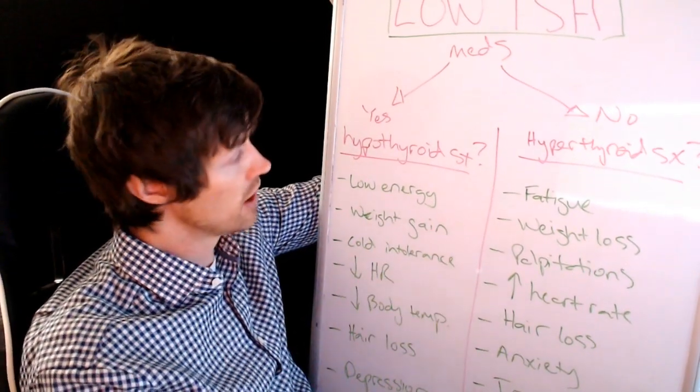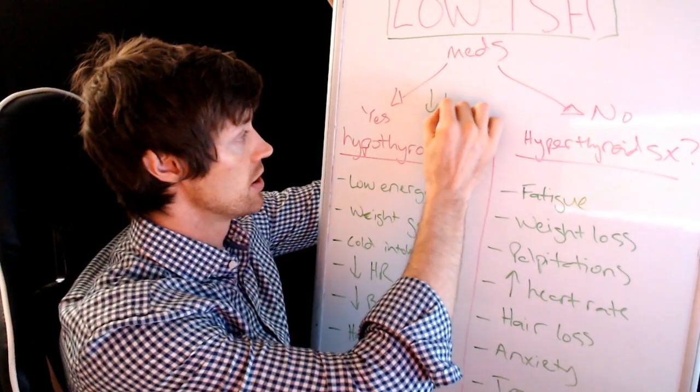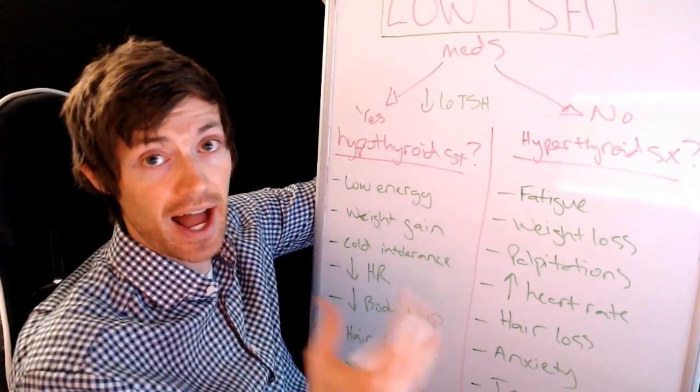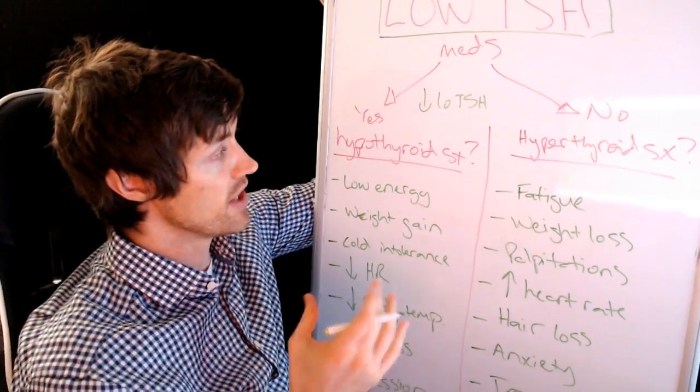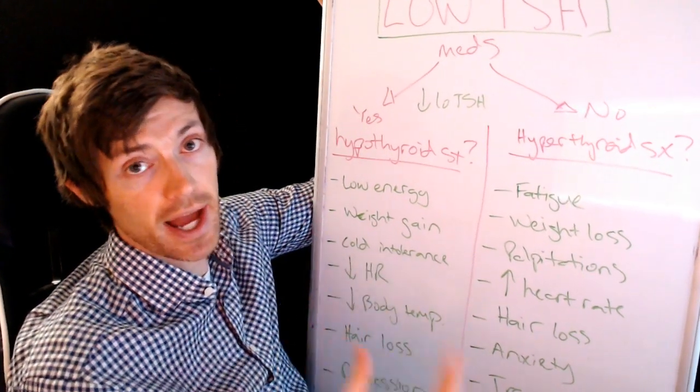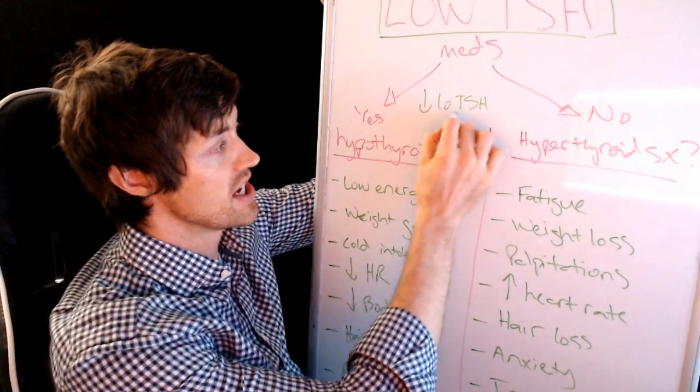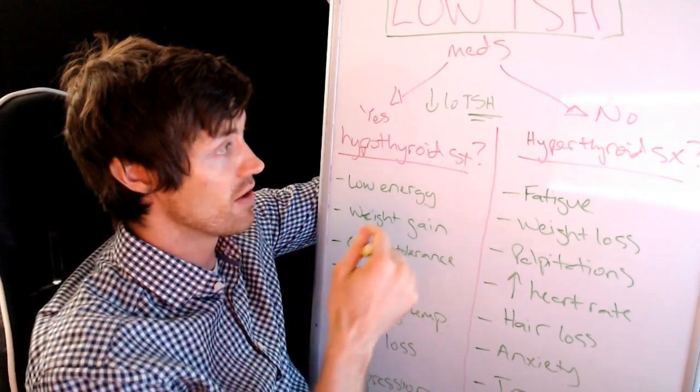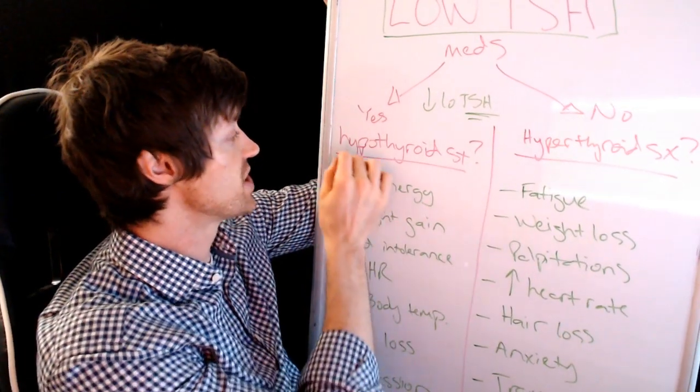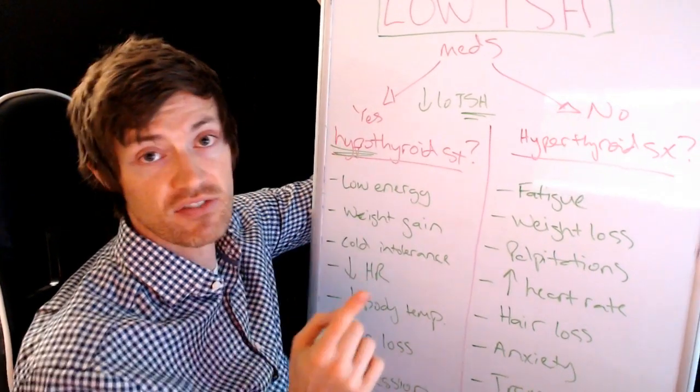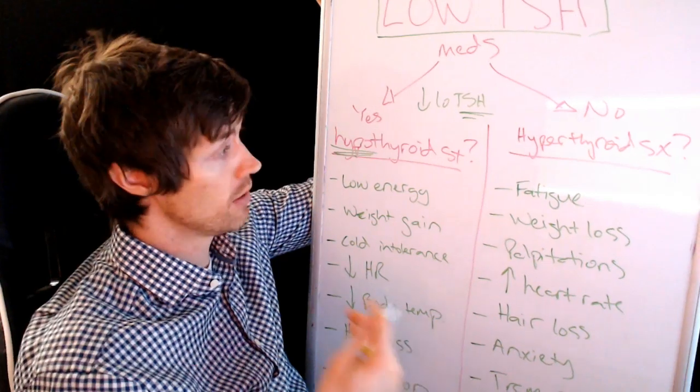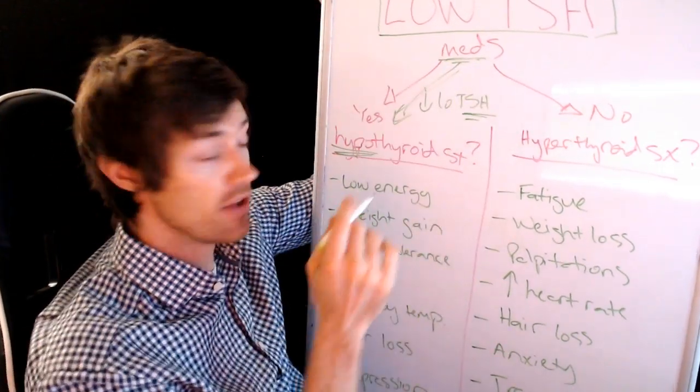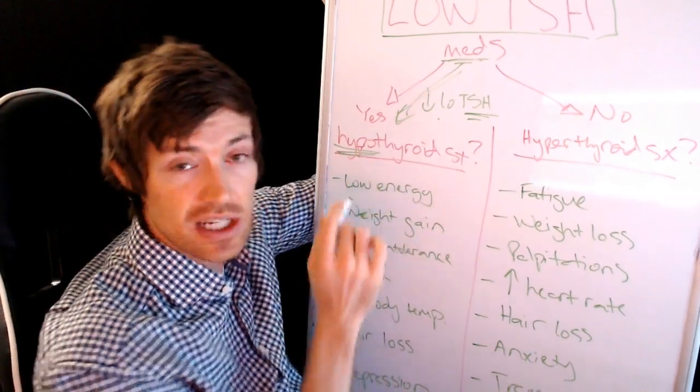It is very possible for you to have a low TSH and still be hypothyroid or still be in a hypothyroid state. Many people try to diagnose hypothyroidism and hyperthyroidism based off of this TSH alone. In fact, many doctors do this. But it's very possible for you to have a low TSH and still be hypothyroid. In fact, I believe that most people who are taking thyroid medication, if they have a low TSH are still hypothyroid.